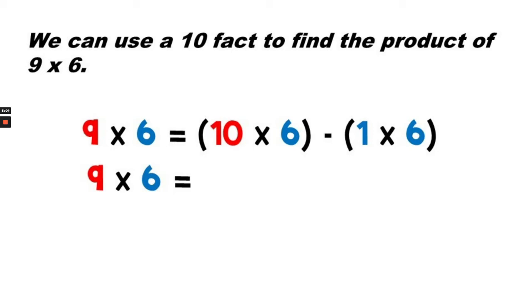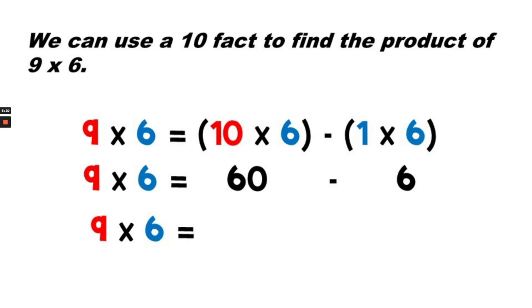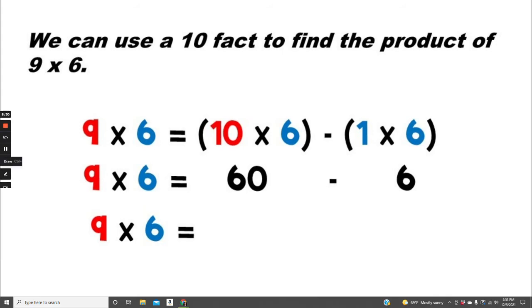Now we can use a 10-fact to find the product of 9 times 6. So 9 times 6 equals 10 times 6 minus 1 times 6. That means 9 times 6 equals 60 minus 6, which is 54.